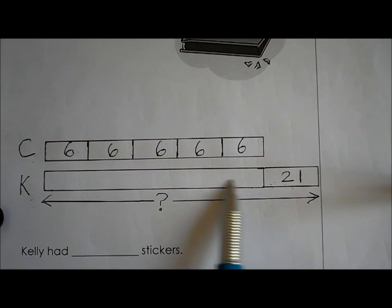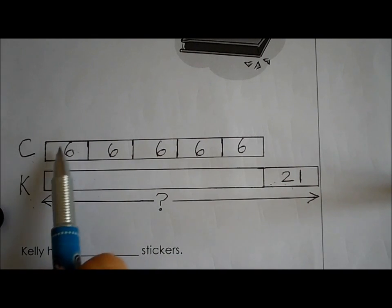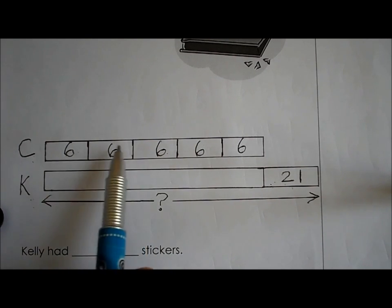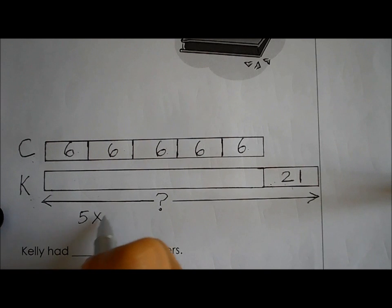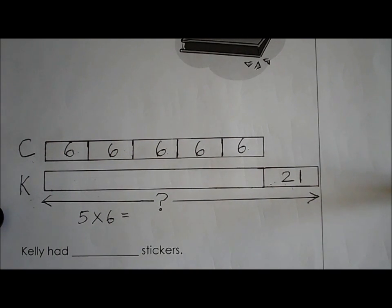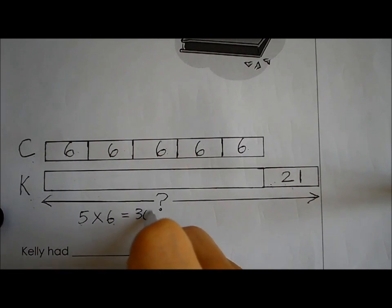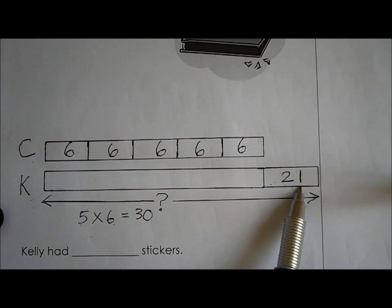I need to first find out how many stickers Celine had. There are 5 groups of 6, so 5 times 6. Using the 5 times table: 5, 10, 15, 20, 25, 30. Yes, 5 times 6 equals 30. But this is what Celine had.